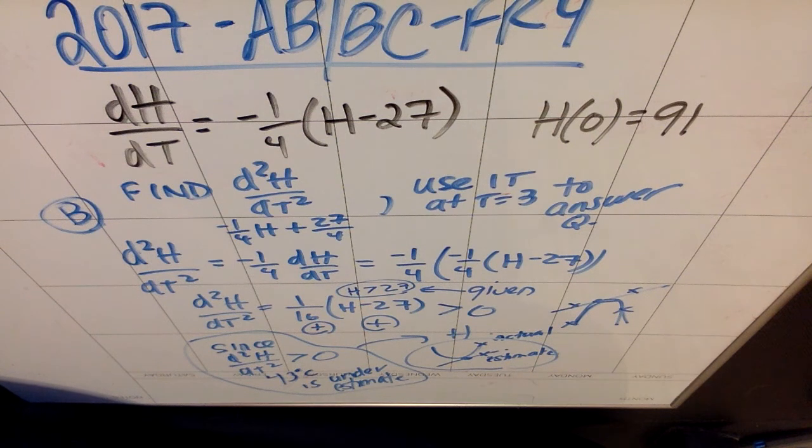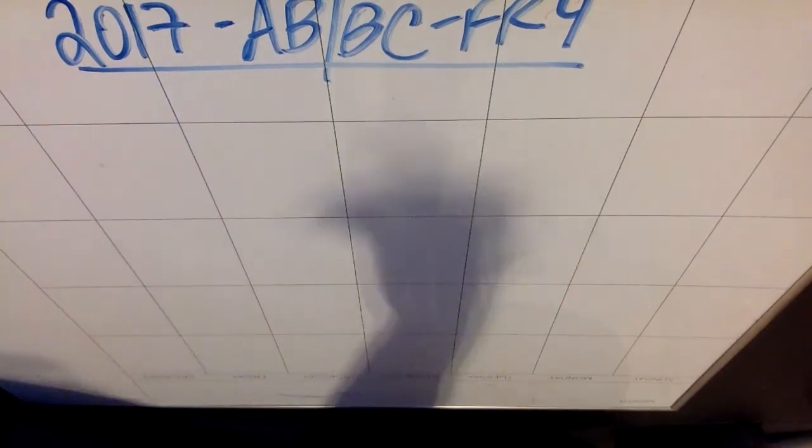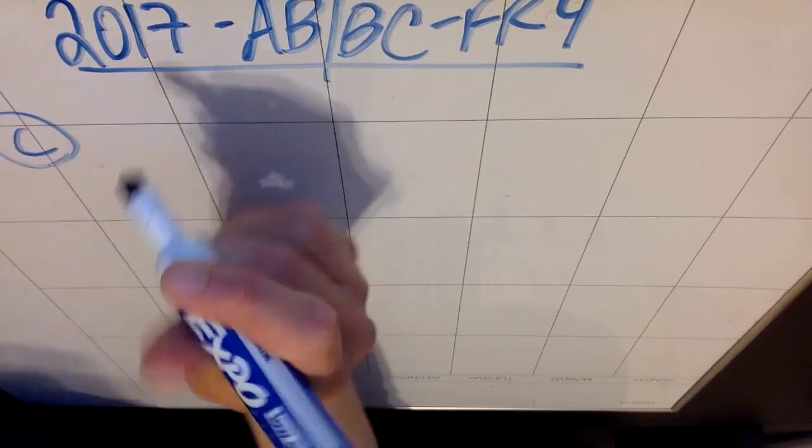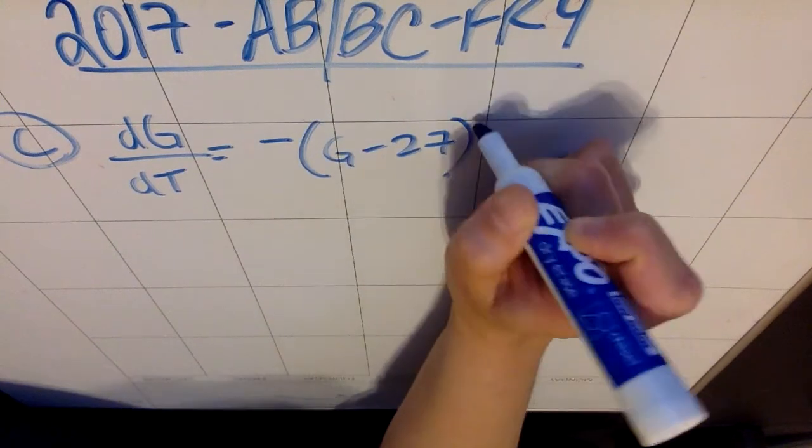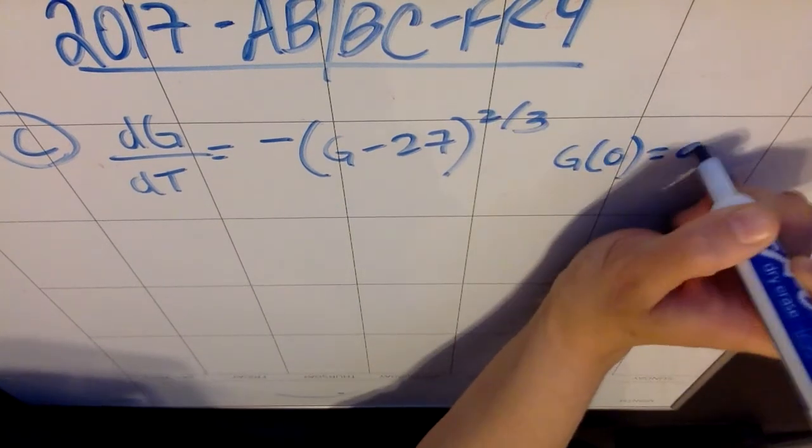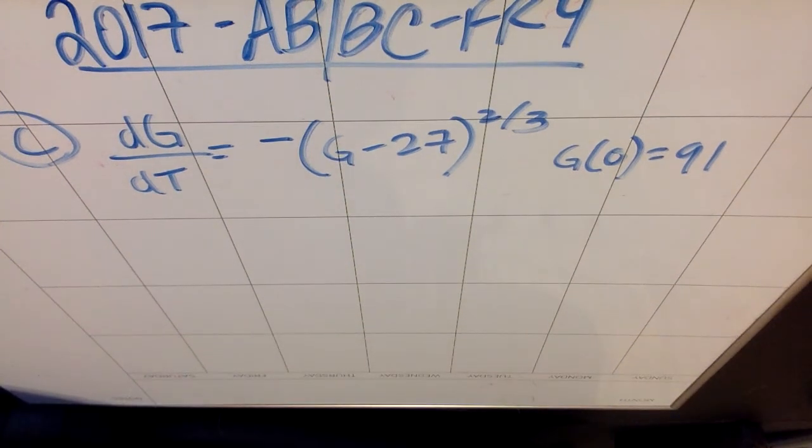Part C: For t less than 10, an alternate model for the internal temperature of the potato is given by a G function, and we have dG/dt. What they're basically doing to you right now is they're 100% changing the problem. You don't need H anymore, it's not relevant. Aside from the fact that the original temperature, which is now G of 0, will also be 91. So in part C, we're given a new function. We're given dG/dt equals negative (G minus 27) to the 2/3, and it's still the same potato. So G of 0 is still 91 degrees Celsius. Find an expression for G of t, and based on this model, what is the internal temperature at t equals 3? Here's the thing: this is going to be where all the points lie in this problem. Probably at least 5, sometimes 6, depending on how much work they make you do in other parts of the problem.